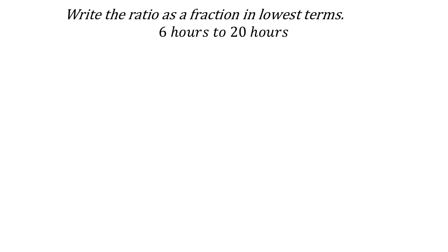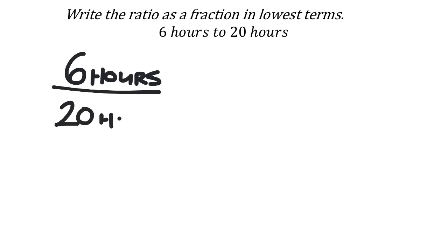For this ratio of 6 hours to 20 hours, we write it as a fraction with 6 hours as the numerator and 20 hours as the denominator. The first number is always the numerator and the second value is the denominator. When we write the fraction in lowest terms, we don't really need the labels — when you have the same units divided by each other, they cancel out.